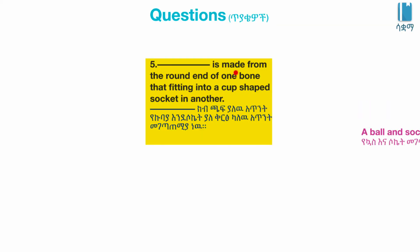Another question: This is made from the round end of one bone fitting into a cup-shaped socket in another bone. This describes a ball-and-socket joint.